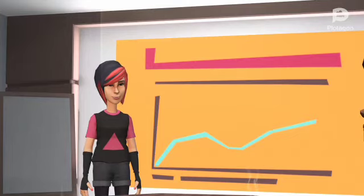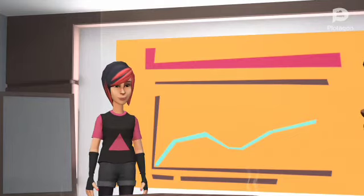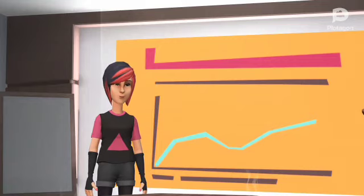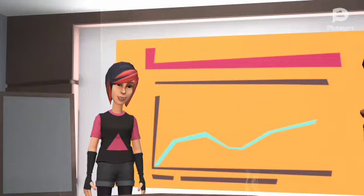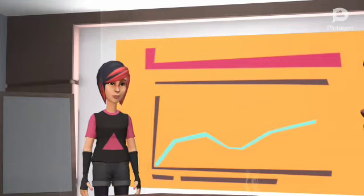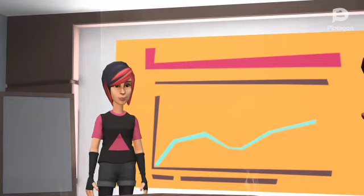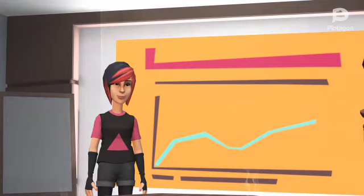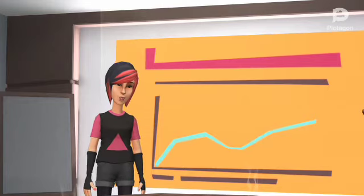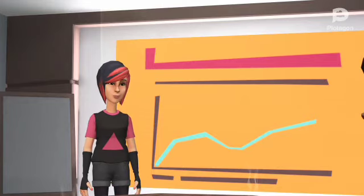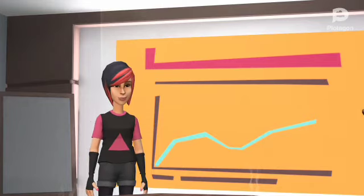Assalamu alaikum students. Welcome to English class. In this video I will introduce you to past continuous tense — Fail Mazi Jari. This is a very easy and simple tense, so keep on watching till the end. Subscribe to my channel, thumbs up, comment and share my video.